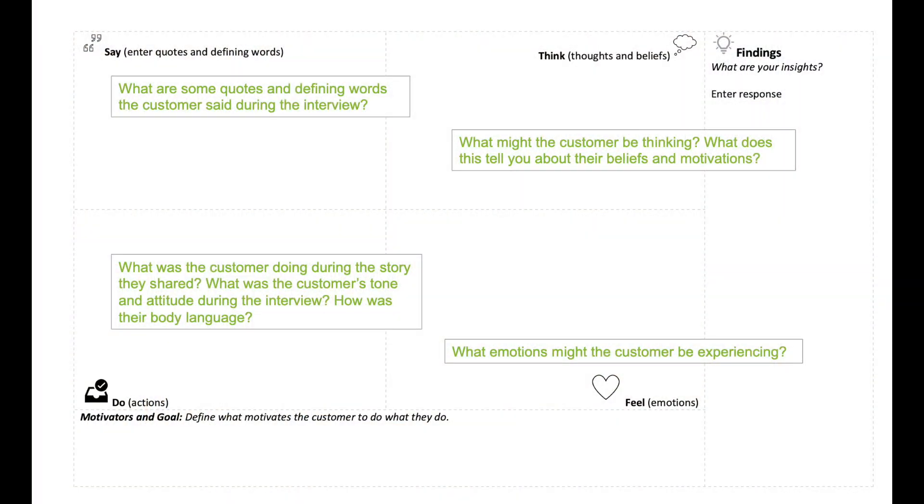Moving down from the saying quadrant, we go into the doing quadrant. The doing quadrant helps unpack two things: first, the context of the story — the activities that were occurring in the experience the customer shared or that was observed by the team. Second, it captures the behaviors of the customer during the interview, such as tone of voice, body language, and other observed elements.